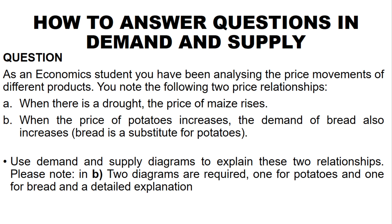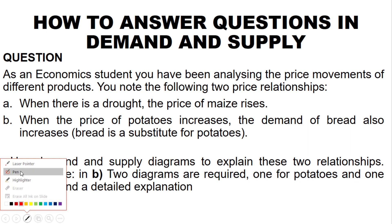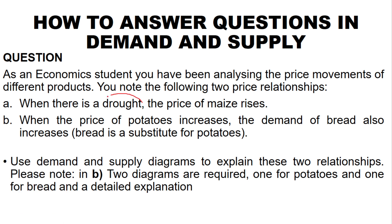In this case, they are talking about drought. Drought is one of the factors that cause the supply curve to shift — it's one of the determinants of supply. If you know the factor being discussed in the scenario, it will be easier to understand. Our main focus is on drought, and drought actually affects supply.